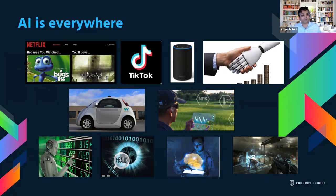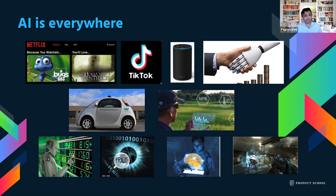Start with entertainment. You've probably all watched Netflix and binge-watched shows. Typically when you watch any programs, it's the AI underneath that is actually recommending what you may or may not like. And typically you end up choosing one of those programs — you don't really search too much on Netflix for what you're looking for; it recommends you stuff.